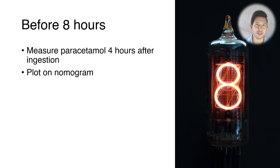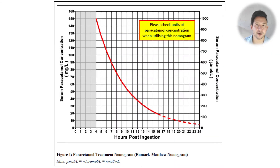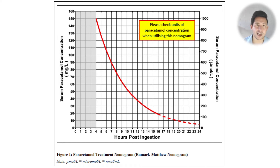If you see a patient who's taken a paracetamol overdose in the first eight hours after ingestion, you should measure their paracetamol levels in the blood at least four hours after ingestion, and then you should plot it on this treatment nomogram. This nomogram essentially plots paracetamol concentration against the hours after ingestion. Do note that there are two different units that paracetamol concentrations are measured in, so make sure you've got the right one.